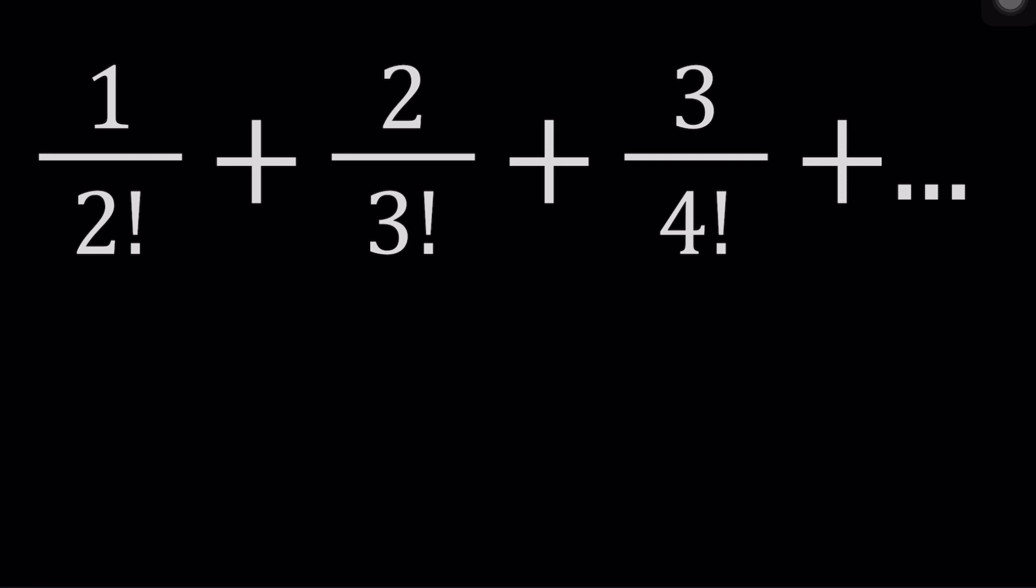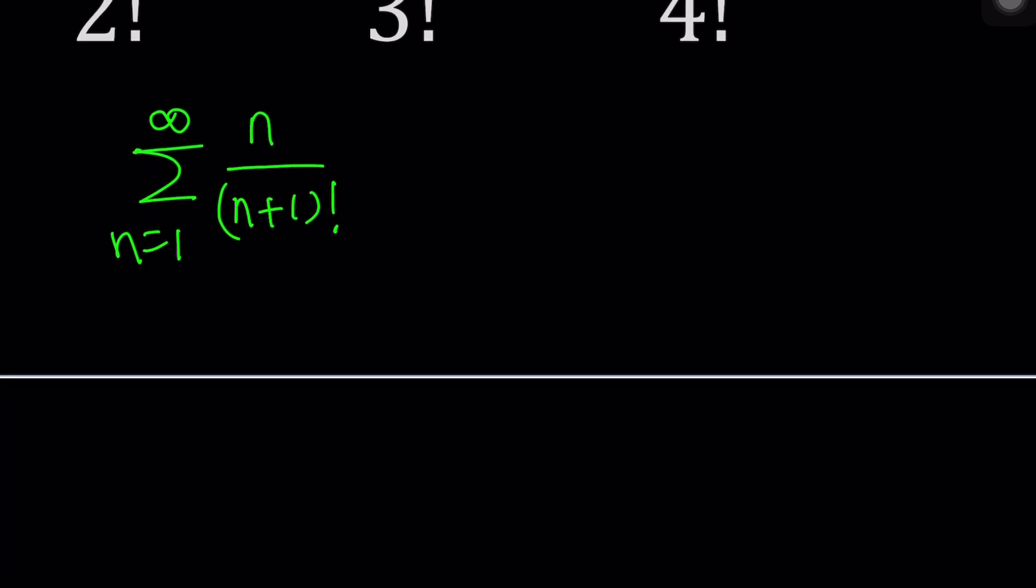What is the general term? Well, it is n divided by n plus 1 factorial, right? And n goes from 1 to infinity. Notice that for n equals 1, n equals 2, n equals 3, you got the first, second, and third terms. And this should continue forever. So this general term is important because if we can simplify it, then the rest should be fairly easy.